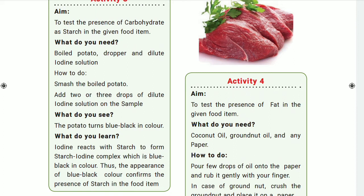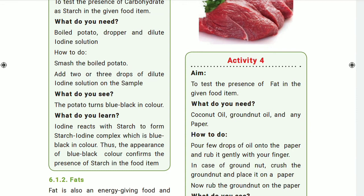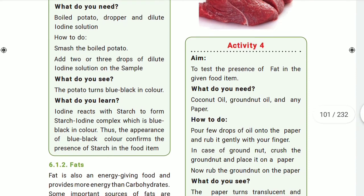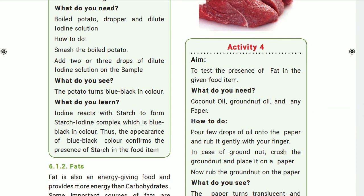Smash a boiled potato and add two or three drops of dilute iodine solution on the sample. You will see the potato turns blue-black in color. Iodine reacts with starch to form a starch-iodine complex, giving a blue-black color. The appearance of blue-black color confirms the presence of starch in the food item.